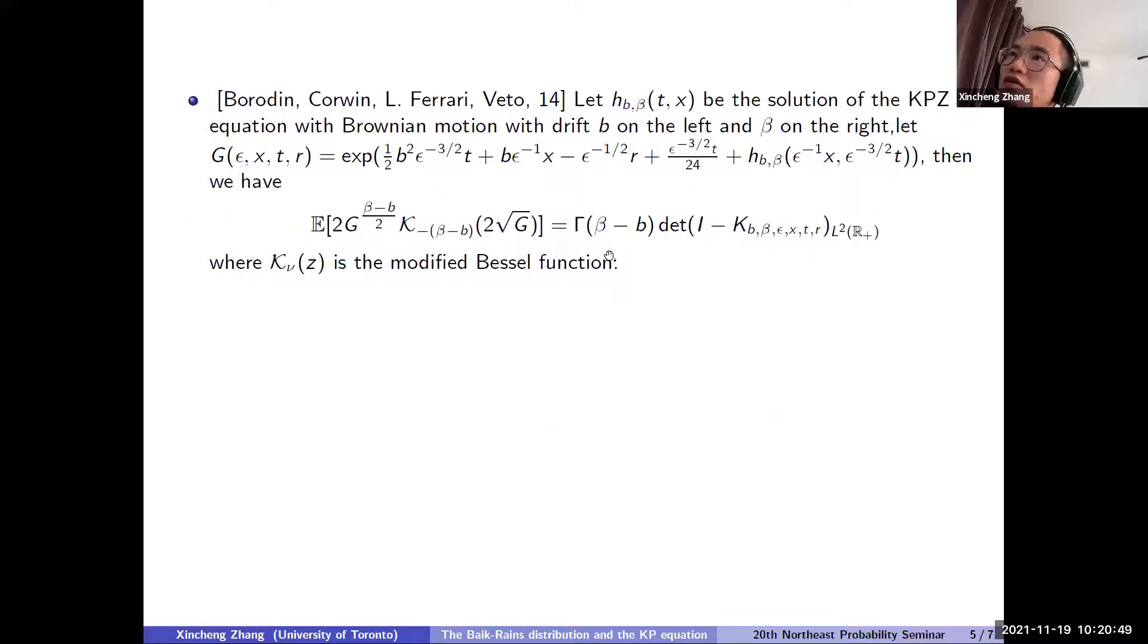Okay, so I'm going to show how the result is discovered and how to prove it. So in this 2014 paper of Borodin, Corwin, Ferrari, and Vető, there is a determinant formula for some transform of the KPZ equation. So let's look at this formula carefully. So here H_b,β is a solution of the KPZ equation with Brownian motion, but with some drift b on the left and β on the right. It has drift b on the left-hand side and drift β on the right-hand side. And then we define a function G, which is a function of ε,X,T,R. So you should just think of the ε just as binding to every variable X,T,R to give the correct scale.